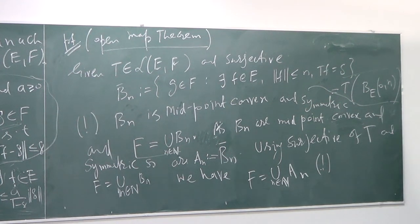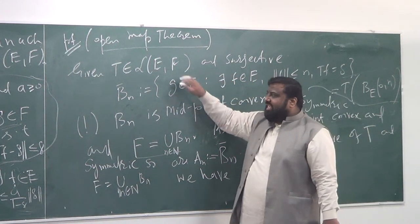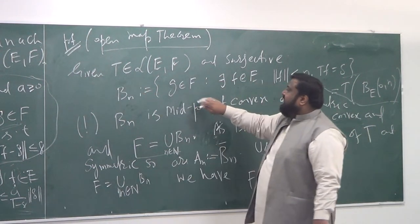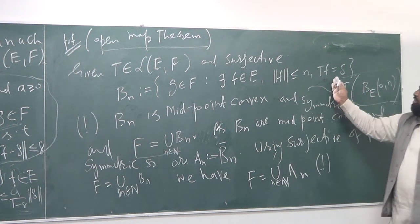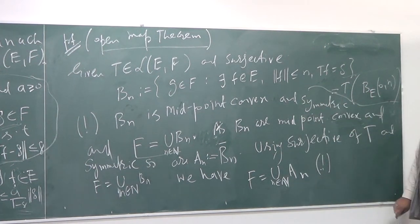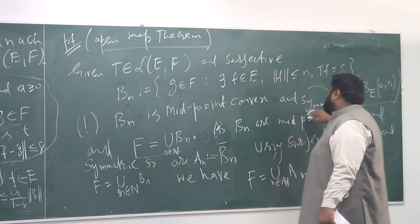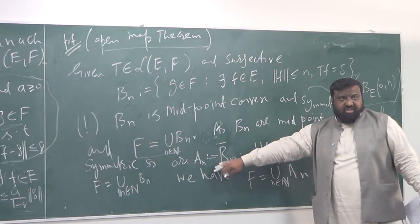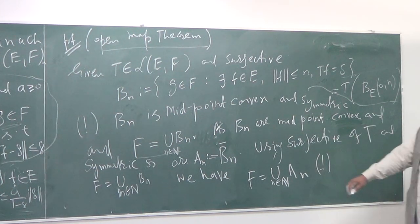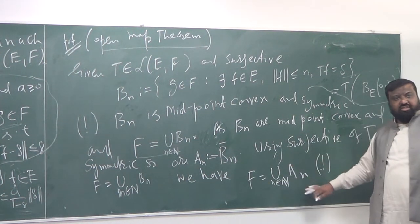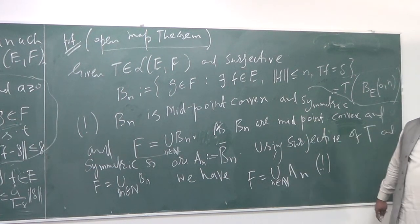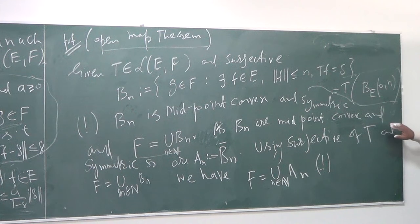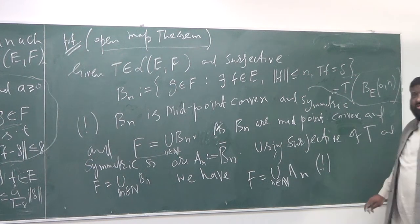To summarize: T is linear, bounded, and surjective. B_n is the collection of g's with preimages of norm at most n. B_n is midpoint convex and symmetric — something to verify. Hence the closures A_n are also midpoint convex and symmetric. F equals the union of A_n's. These four facts need rigorous justification as exercises.